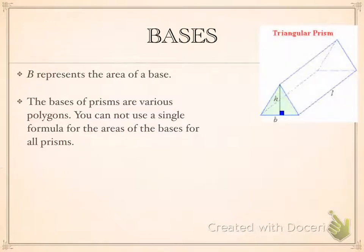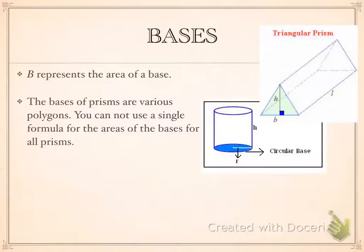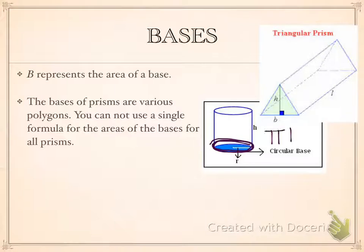Some examples: we've got the triangular prism, where our base is a triangle. To find that area, you would do one-half base times height. So B equals one-half base times height of the triangle, and you need to make sure you're measuring the triangle and not the side. We also have cylinders, where we might have a circular base. For a cylinder, your area is going to be pi times your radius squared, so you would need to know the radius.